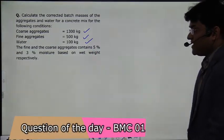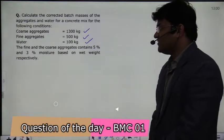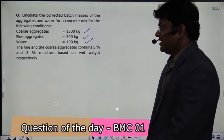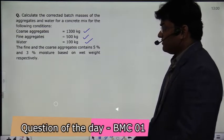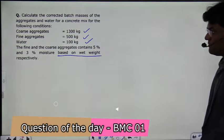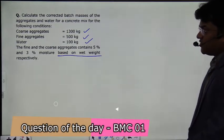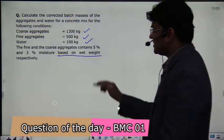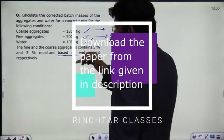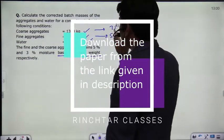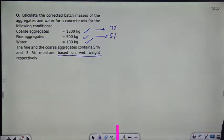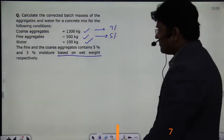The fine aggregate contains 5% moisture and the coarse aggregate contains 3% moisture, based on weight. So the fine aggregate moisture content is 5% and the coarse aggregate moisture content is 3%. The coarse aggregate design mass is 1300 kg.